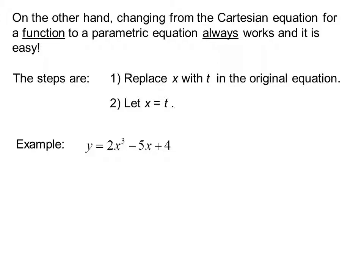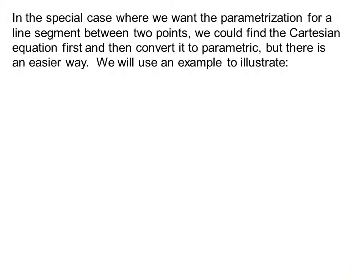For example, y equals 2x cubed minus 5x plus 4. To change that to a parametric equation it becomes y equals 2t cubed minus 5t plus 4, and x equals t.